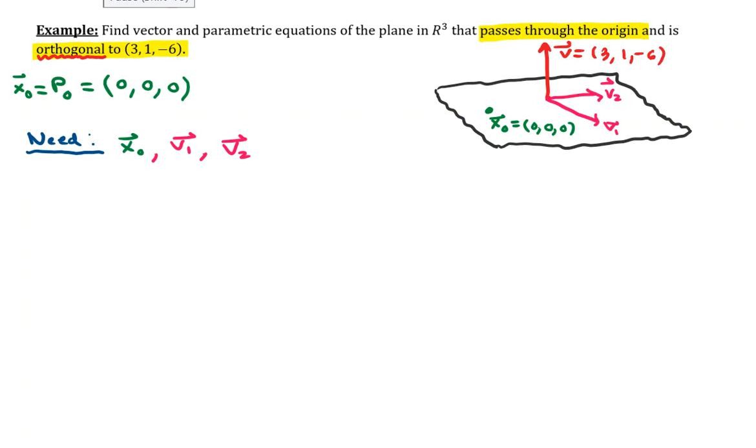Obviously, the components of V sub 1 and V sub 2 are not provided for us, but we are going to need those components. Here's the crux of the problem. Keep in mind that V sub 1 and V sub 2 being in the plane, and the plane being orthogonal or perpendicular to the vector (3, 1, -6), means that both vectors V sub 1 and V sub 2 have to naturally be perpendicular or orthogonal to this vector V.